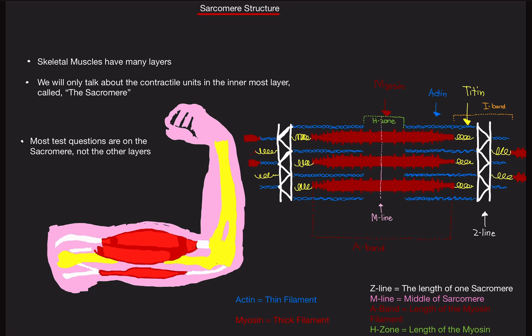So that concludes the sarcomere. We're going to make another video on how it actually contracts, which is a big video. But this is just the basics. So it's really important that you know these terms and bands and lines and what actin, myosin, and titin are. If you found this useful, please like and subscribe. And until tomorrow, later.